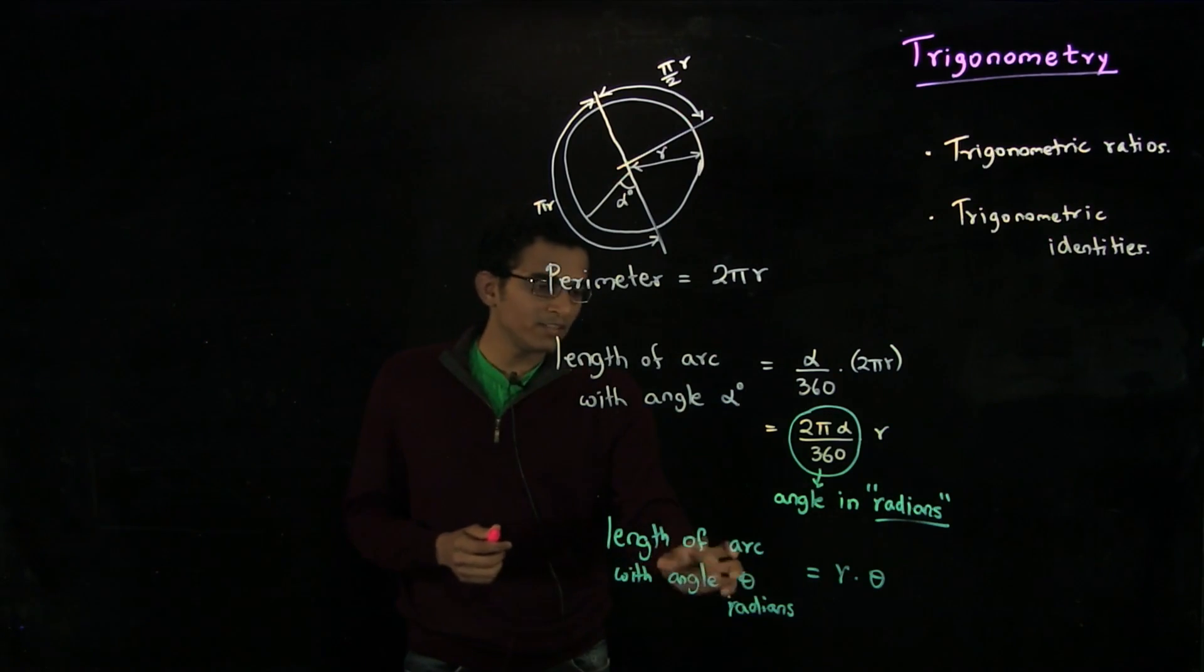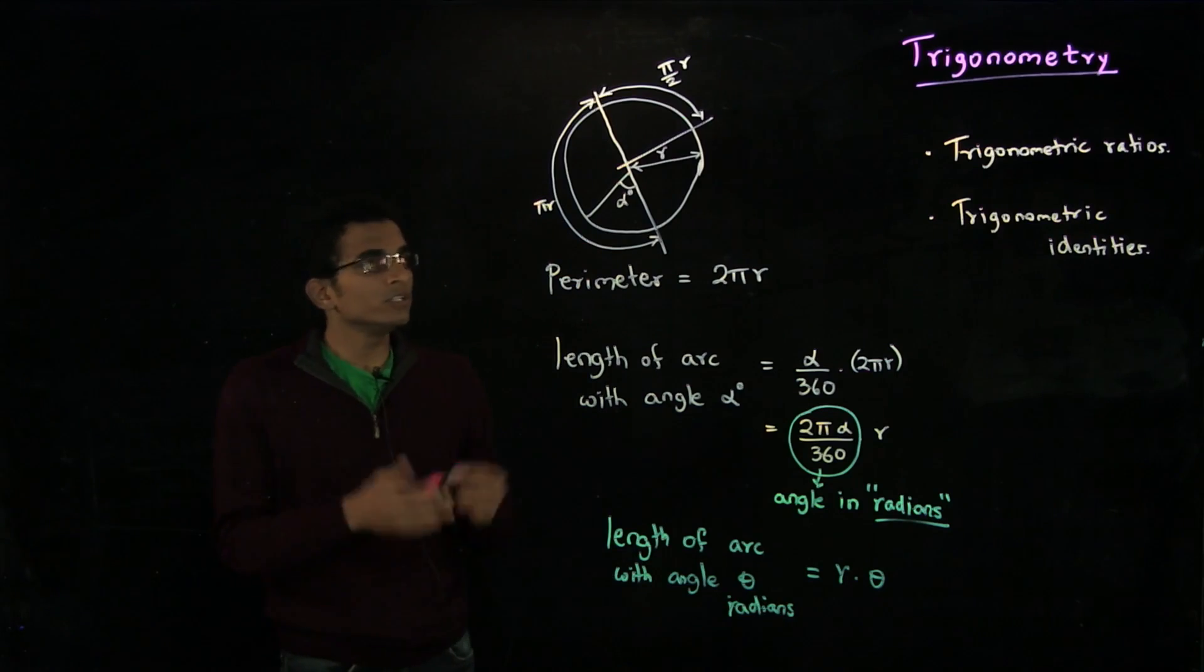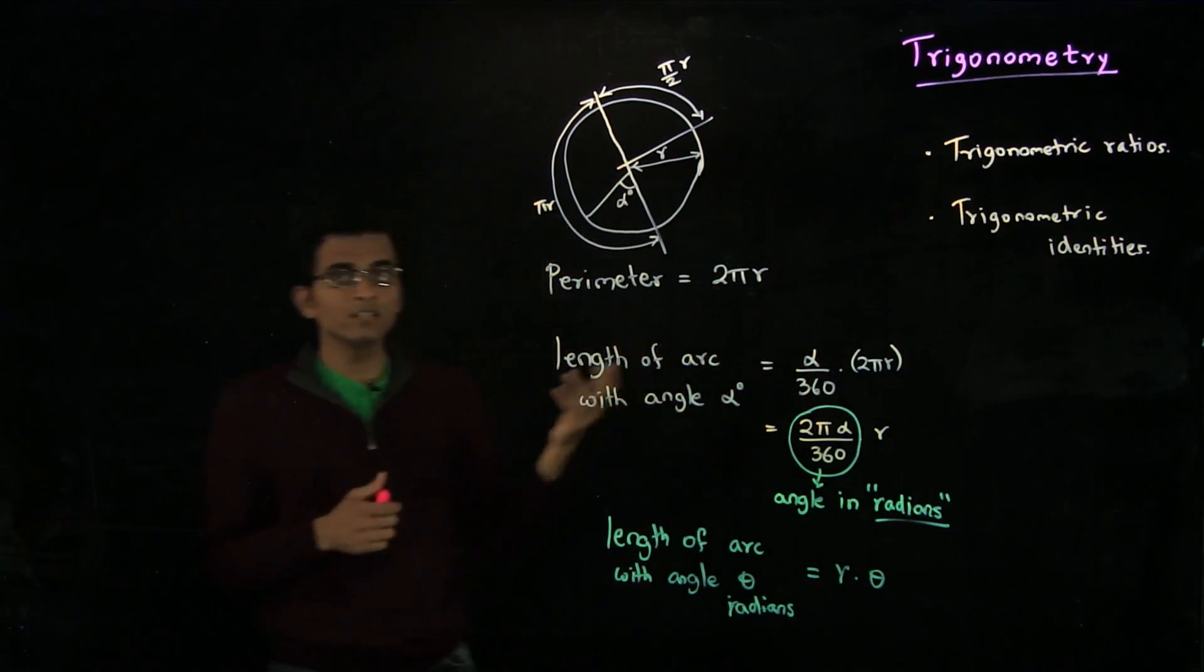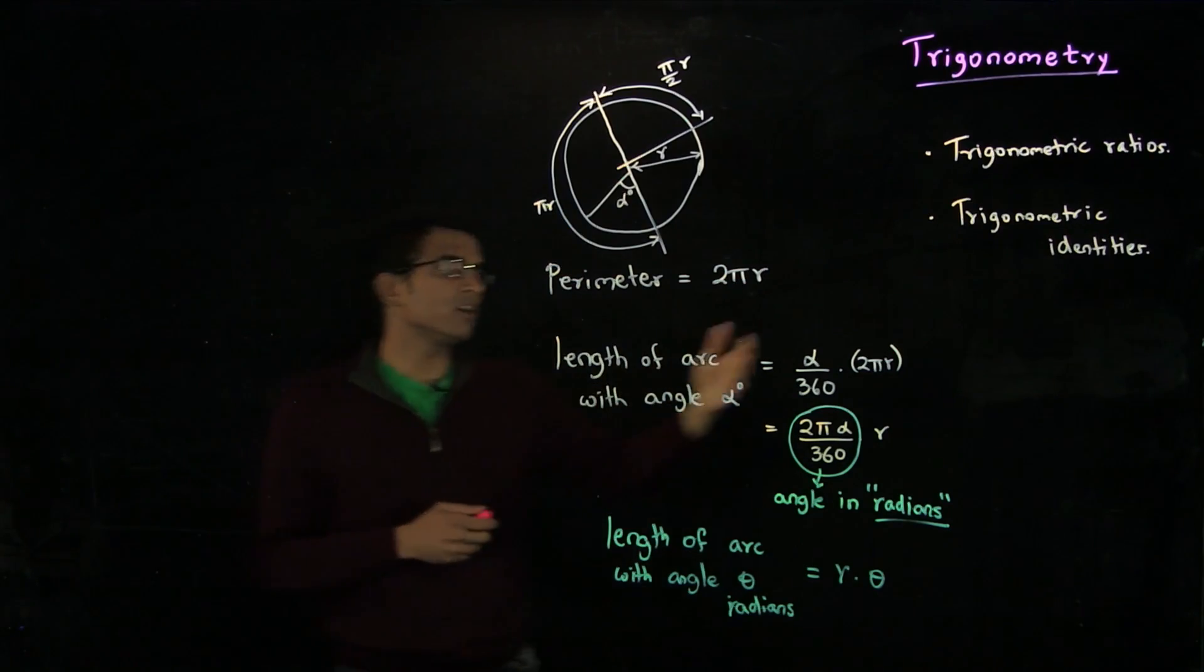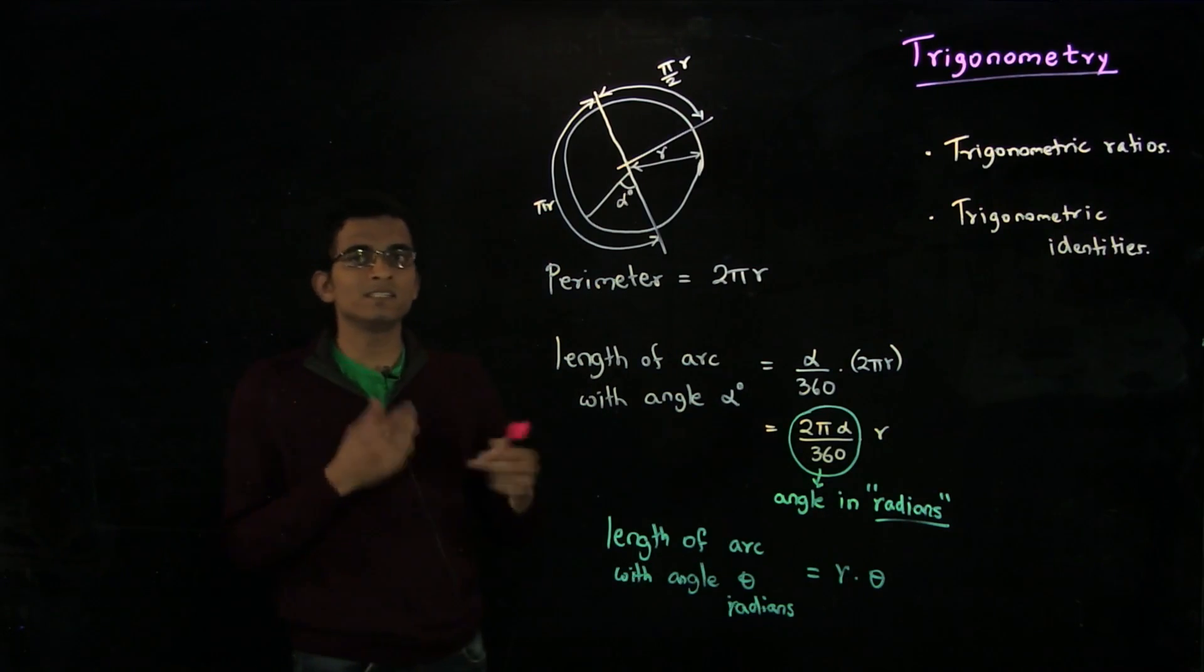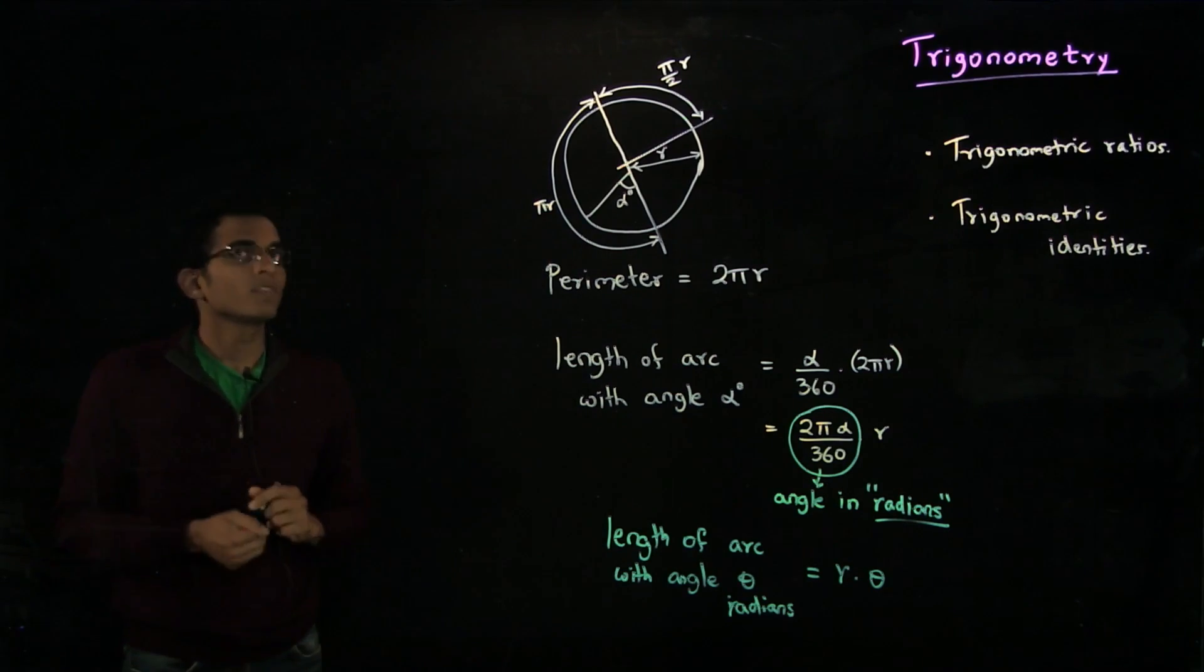Now the length of the arc with angle of theta radians is just r times theta. In the rest of the video, we will talk about trigonometric ratios, we will define what they are and we will talk about some trigonometric identities. These are the algebraic tools which will help us reason about angles in a more algebraic way.